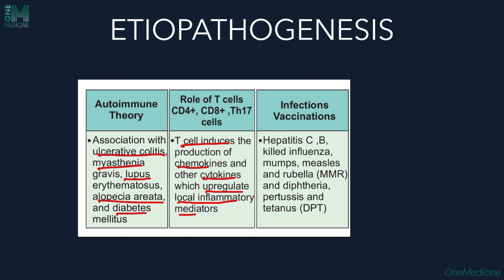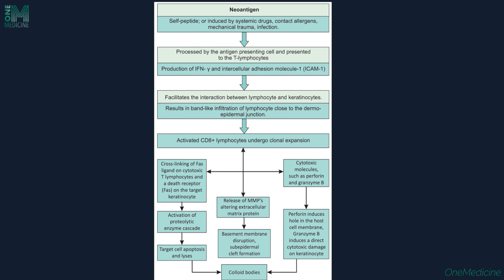Infections and vaccinations also play a role. Hepatitis B and hepatitis C are known to cause Lichen Planus. Certain vaccines like killed influenza vaccine, measles, mumps, rubella (MMR vaccine), diphtheria, pertussis, tetanus (DPT vaccine) are also known to cause LP.